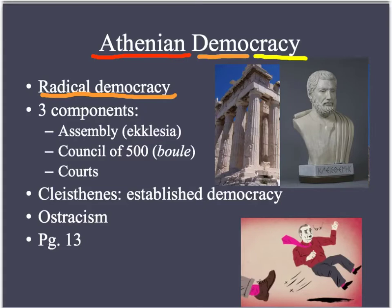The second component is the Council of 500, or the Bule. As you might guess, it had 500 people. Cleisthenes divided Athens into 10 different tribes, and each of these 10 tribes had 50 people representing them — 10 times 50 is 500. The Council of 500 essentially served as their executive branch, helping to implement the laws. In addition, they prepared the agenda of what the Ekklesia would be voting on. The presidency of the Bule rotated monthly among the 10 tribes.